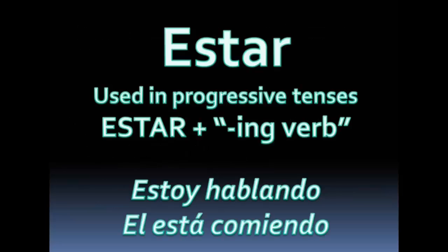Estar is also the verb that we use when we use progressive tense. If you haven't learned these yet, don't worry, you will. I am talking — present progressive — estoy hablando. He is eating — él está comiendo. He is is the él está, and then comiendo, eating.